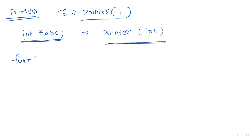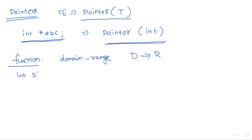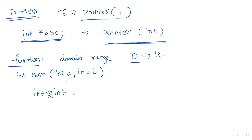The next type constructor is function. The type expression for a function is defined by the domain and range: domain → range. For example, consider the function int sum(int a, int b). The type expression is written as: the domain is int × int — two integer data types — and the range is int. So the type expression is int × int → int.